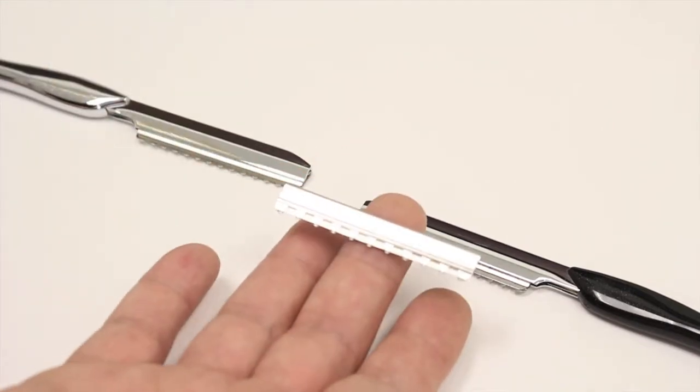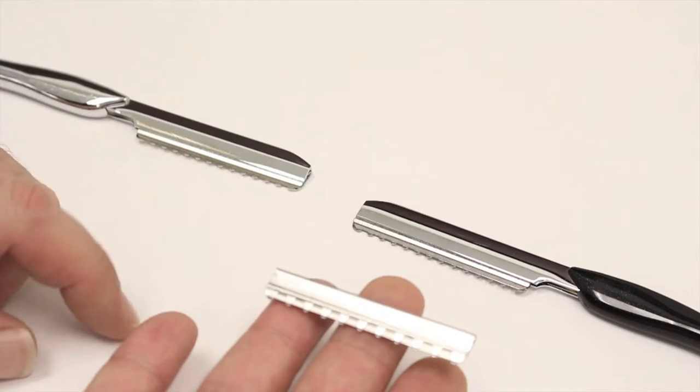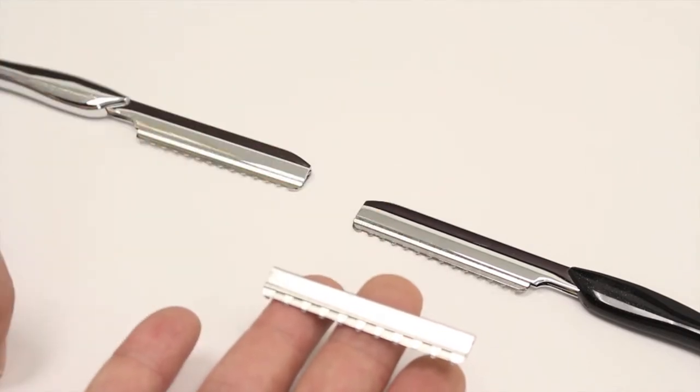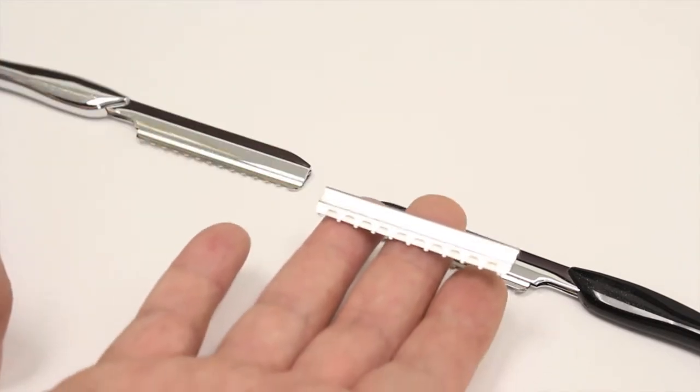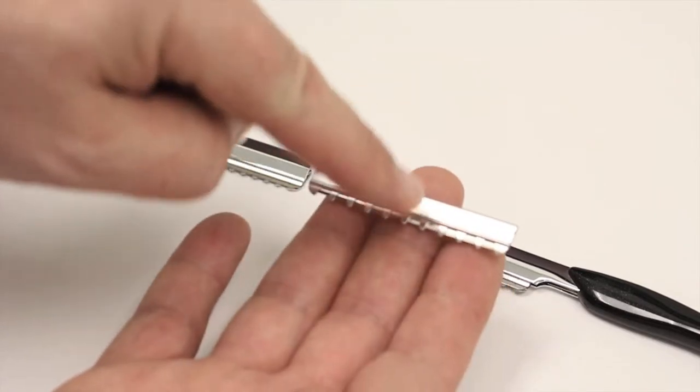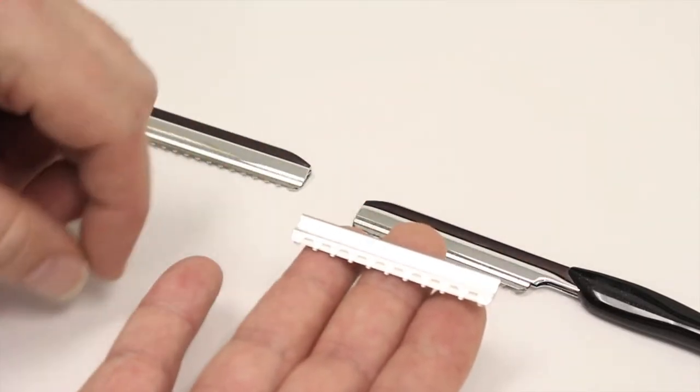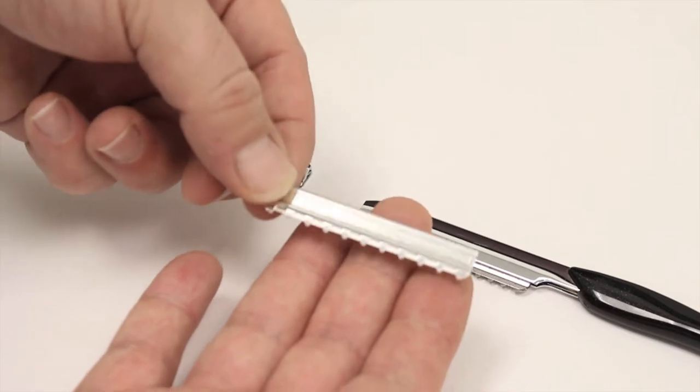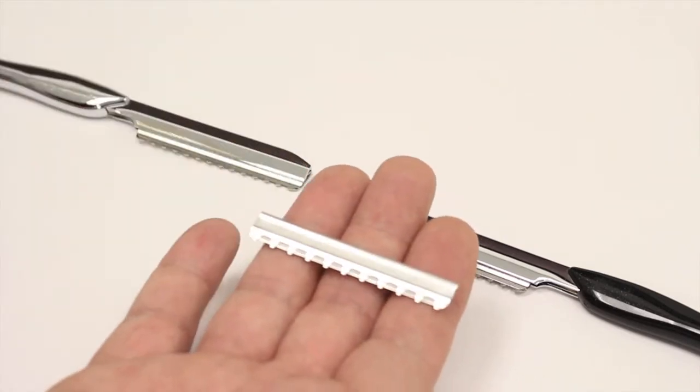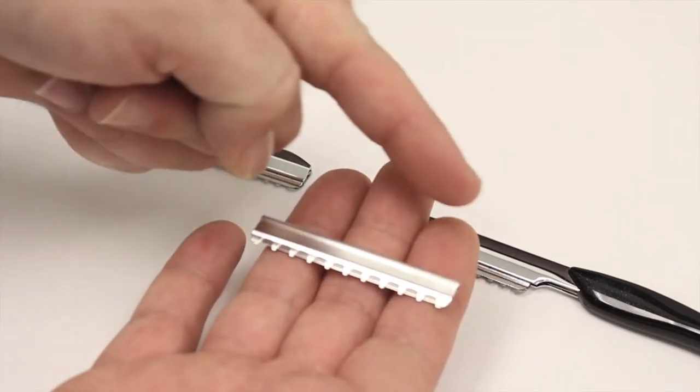Now, if the razor is put—so this is, let's say this is a razor which is going to be used in somebody's right hand. So at the moment, this blade is the wrong way around.